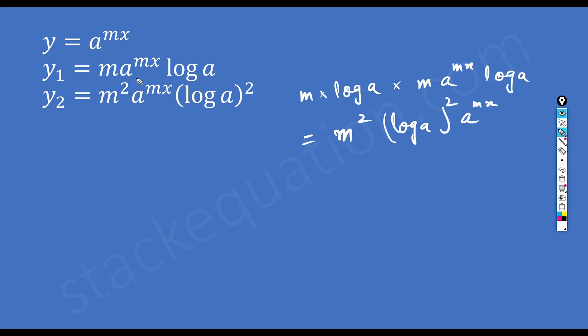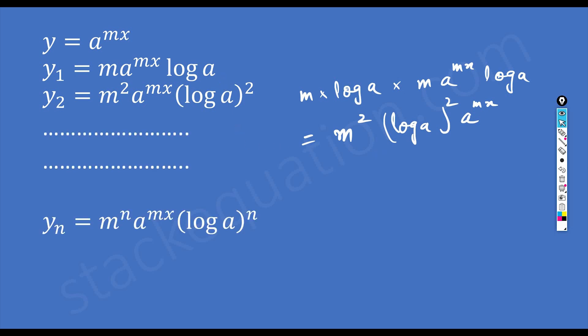Observing the pattern from the first two derivatives, a to the power mx is constant, and the exponent of m equals the order of differentiation. Hence, we can generalize: the nth derivative of a to the power mx is m to the power n into a to the power mx into log a to the power n. The exponents of m and log a both equal the order of the derivative.